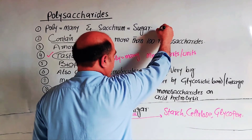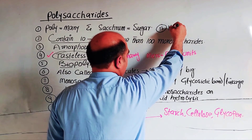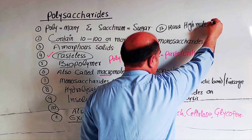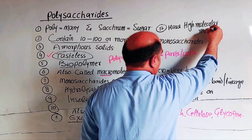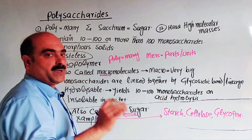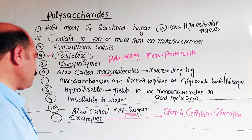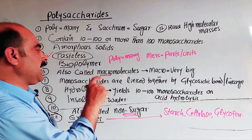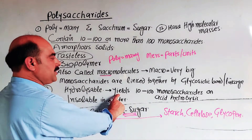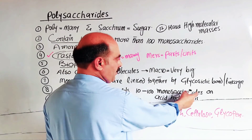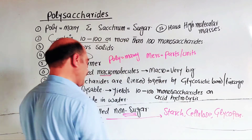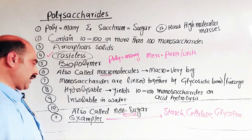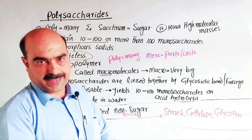Properties 11 and 12: they have high molecular masses, usually greater than 10,000 AMU. They are hydrolyzable — on acid hydrolysis they yield 10 to 100 or more than 100 monosaccharides. They are insoluble in water and are also called non-sugars. Examples: starch, cellulose, and glycogen.